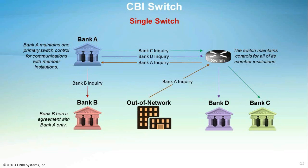CBI switch provides support for organizations to participate in the CBI network without installing CONICS software. This enables maximum penetration of the CBI network across the financial and retail business communities. Any company that accepts financial payments and wants to validate those payments as soon as possible can benefit from the CBI network. Examples of non-CONICS inquiring institutions are merchants, check cashing stores, and financial institutions that operate duplicate and fraud solutions provided by vendors other than CONICS. Institutions that don't have CONICS software installed, or out-of-network institutions, can initiate cross-bank inquiries to a CBI switch via industry standard communication requests. The out-of-network institution would operate its own software to inquire on the system and funnel its inquiries through the switch.